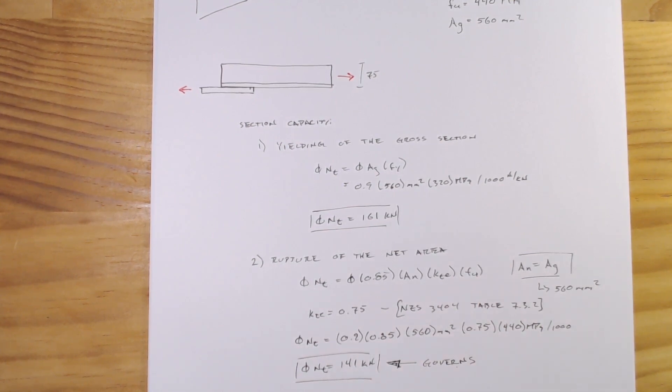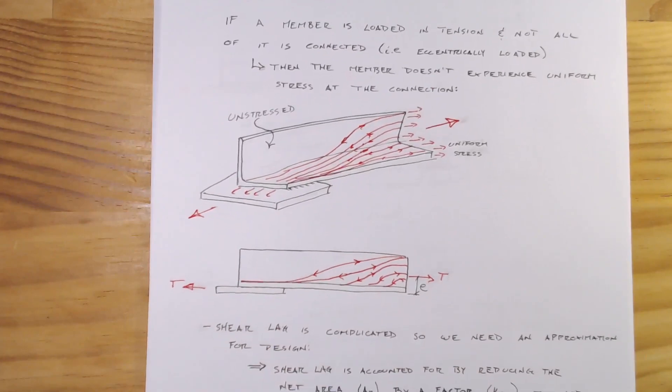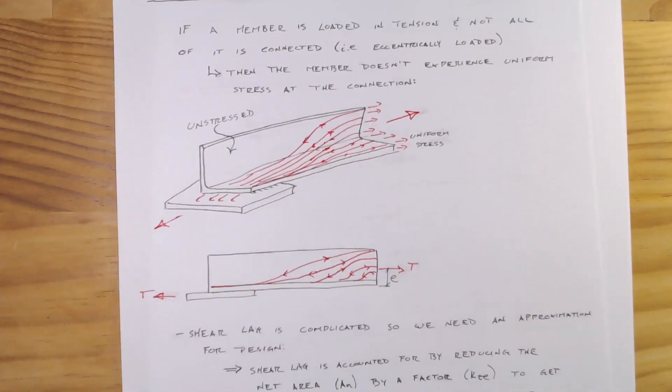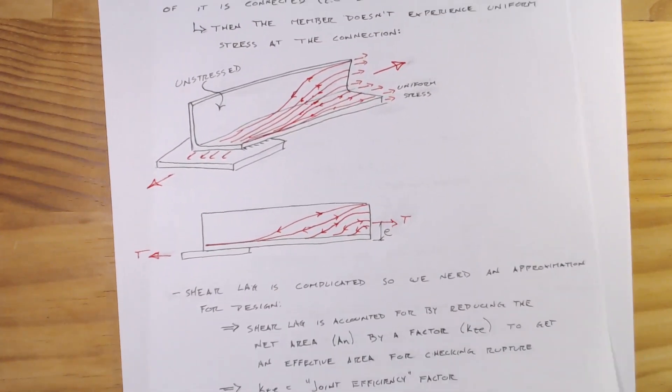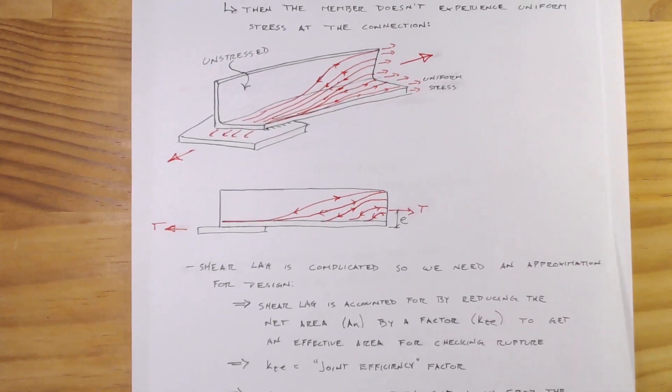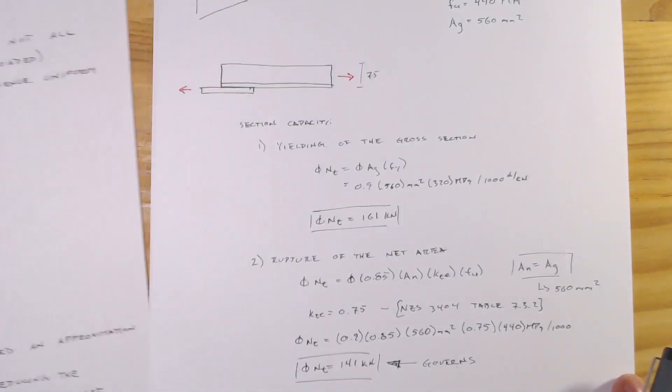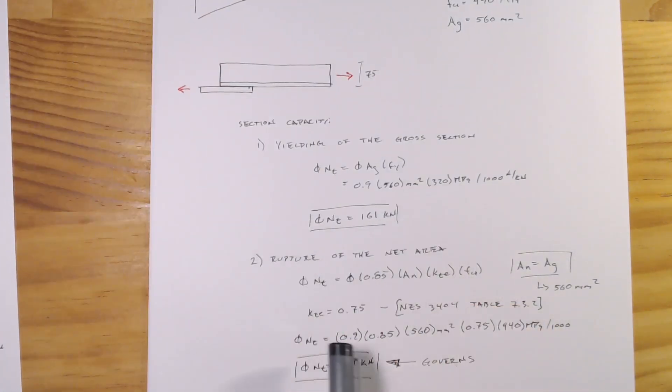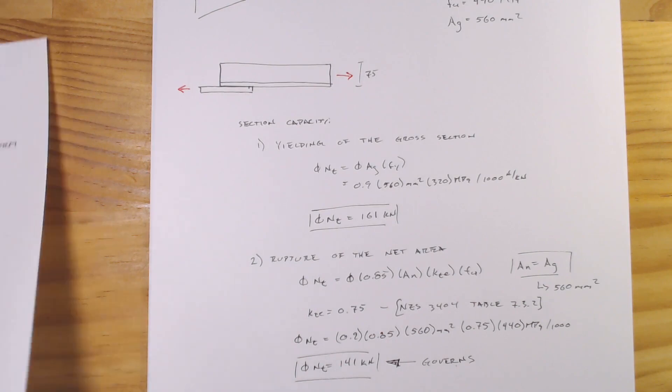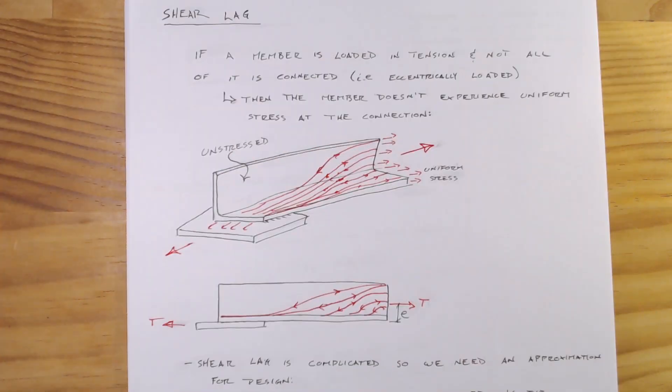So hopefully that seems fairly straightforward. Really it's this shear lag and eccentricity of joints where this kte factor is coming from, and it's really quite simple to just look it up in the steel standard for these different cases. With that, just then plug it into your normal section capacities. With that, thanks for watching.